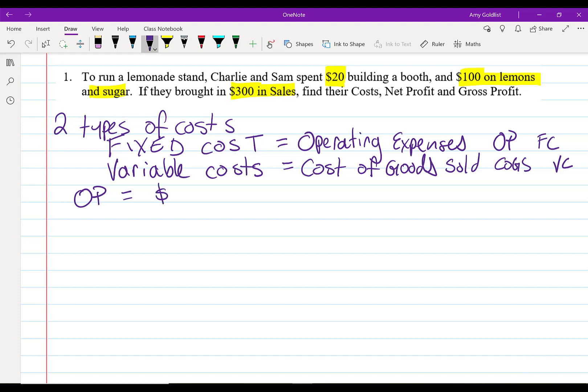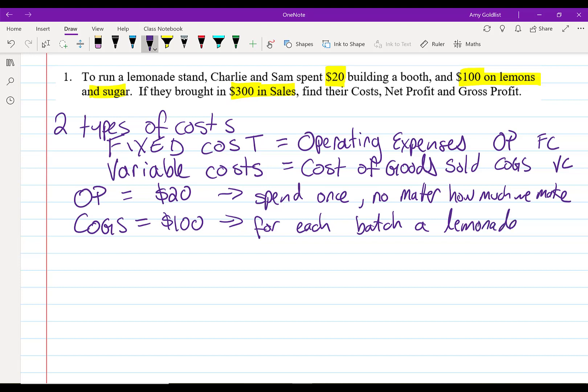In this case, we have both types of expenses. Our operating expenses here are the $20 on the booth. We spend that once no matter how much lemonade we make. So that's a one-time expense. That's what makes it an operating expense as opposed to our lemons and sugar, which is $100. So every time we make a batch of that much lemonade, we're going to have to spend an equal amount of money on lemon and sugars.